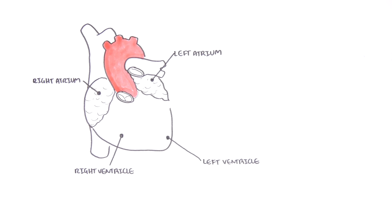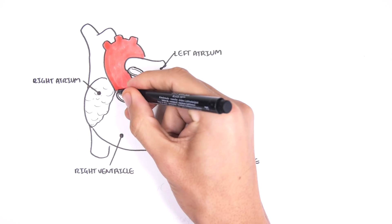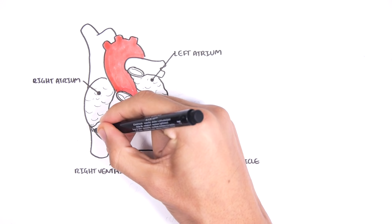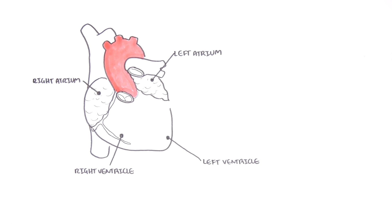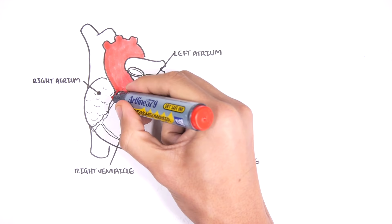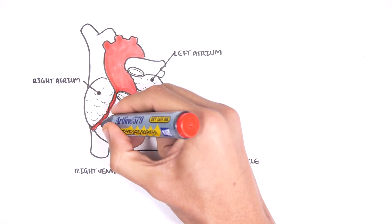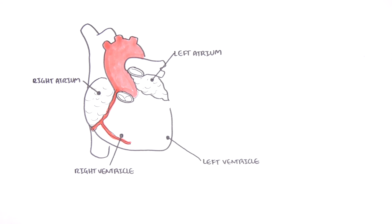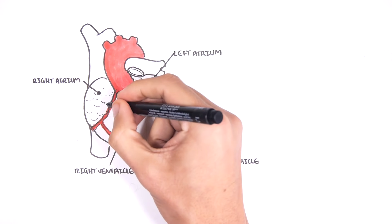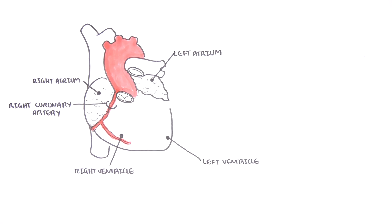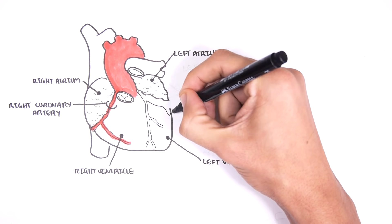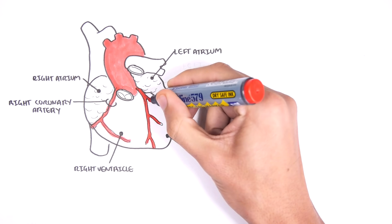The heart is a muscular pump which requires energy and oxygen in order for it to function properly. The blood supply to the heart comes from the arteries, and these arteries are the coronary arteries which come off the ascending aorta. There are two main branches: the right coronary artery and the left coronary artery.